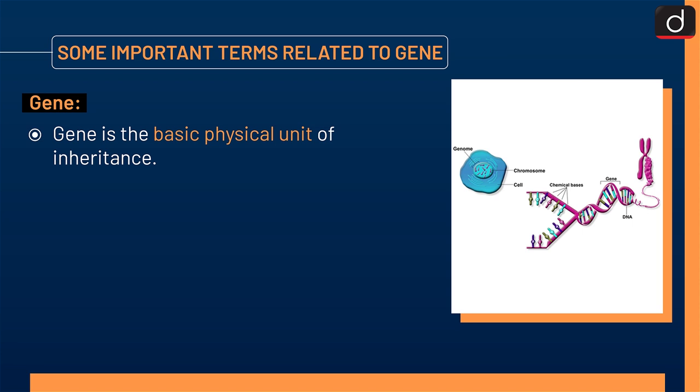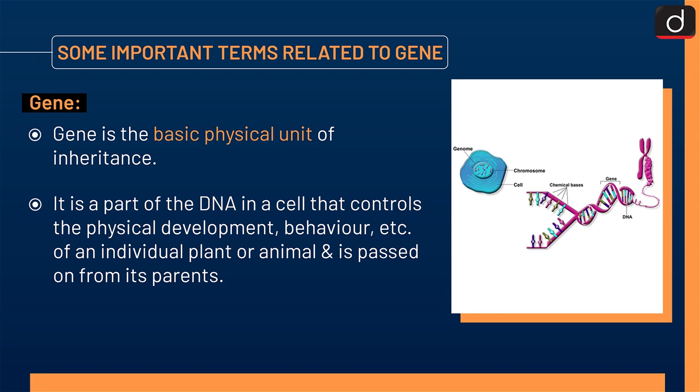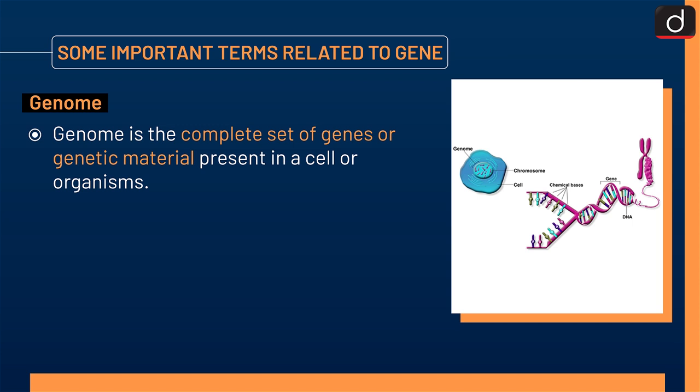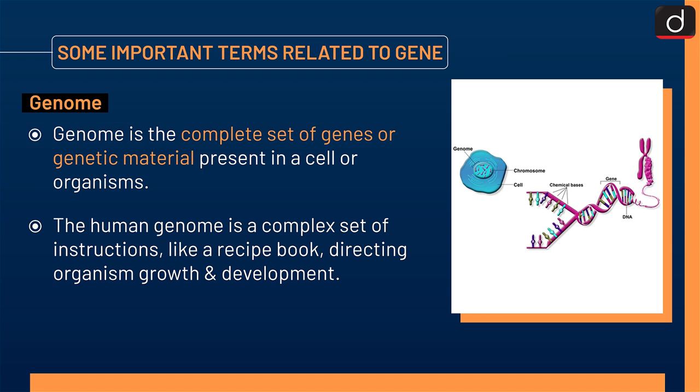Now let's discuss some important terms related to gene. Gene is the basic physical unit of inheritance. It is a part of the DNA in a cell that controls the physical development, behavior, etc. of an individual plant or animal and is passed on from its parents. Genome is the complete set of genes or genetic material present in a cell or organism. The human genome is a complex set of instructions like a recipe book, directing organism growth and development.